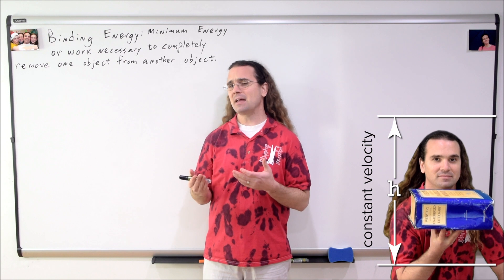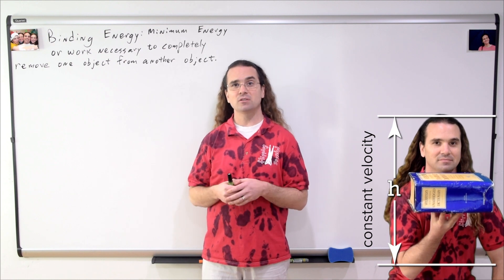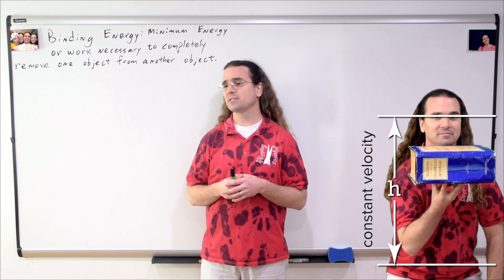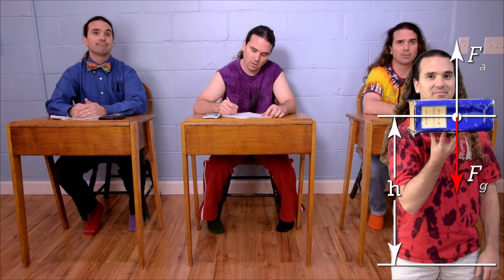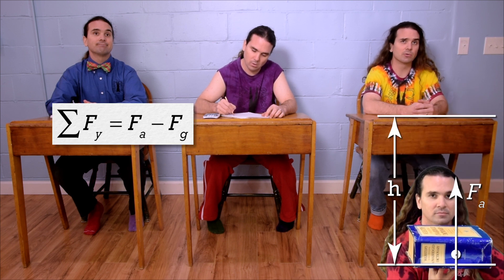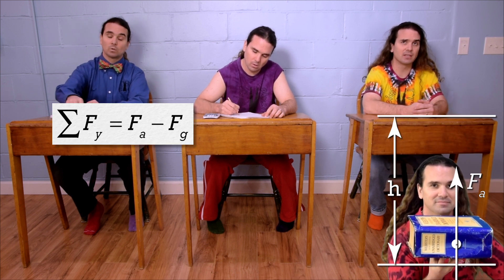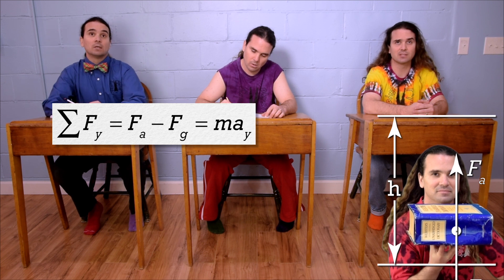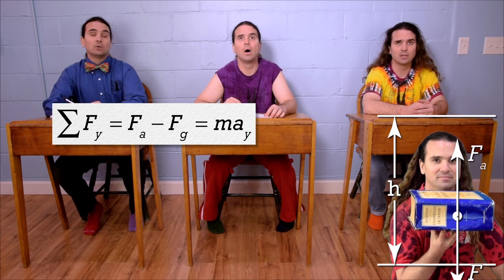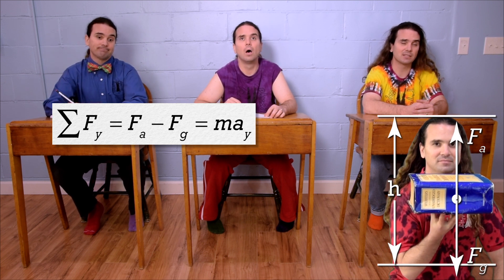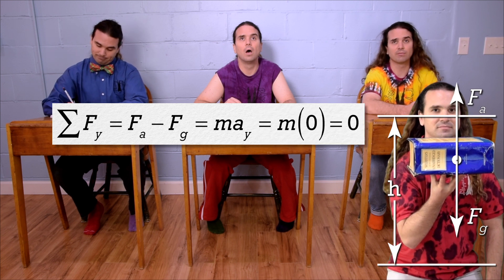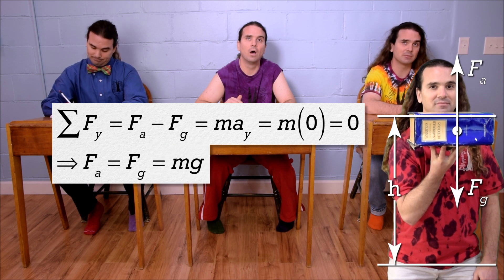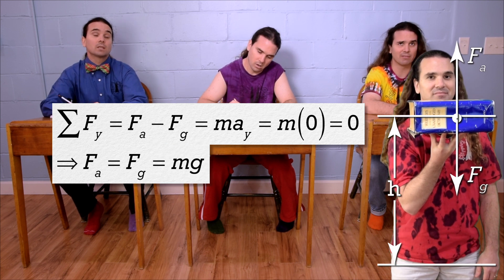Bo, please draw a free body diagram and sum the forces on the book while it is moving upward at a constant velocity. The force you are applying to the book is up and the force of gravity is down. The net force in the y direction equals force applied minus force of gravity, and it also equals mass times acceleration in the y direction. Because the book is moving at a constant velocity, the acceleration in the y direction is zero. Therefore, force applied equals force of gravity, which equals the mass of the object times the acceleration due to gravity.